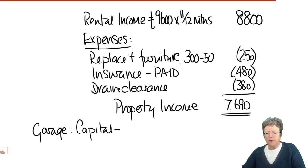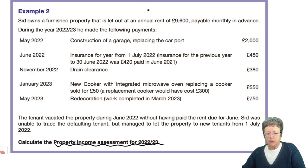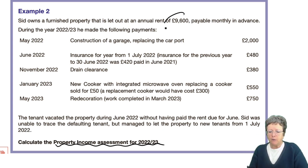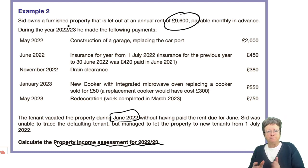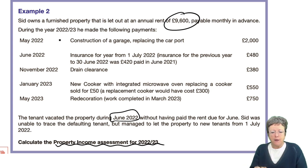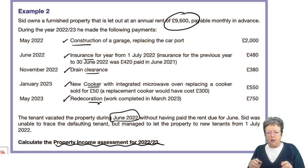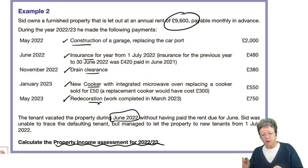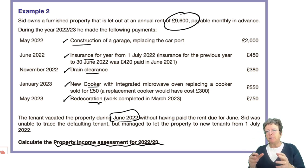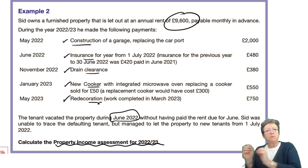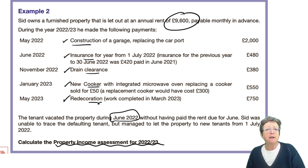The property income figure that would go into the income tax computation is £7,690. You'll notice the garage is missing — that's a capital expense, not allowed. The redecoration paid in May 2023 is also excluded. When you've got a question like that, work out each item: drain clearance definitely goes in; insurance on a cash basis must have been paid, so it goes in; the cooker — apply the replacement furniture rule. Do the easy bits first, then the more complicated bits afterwards.